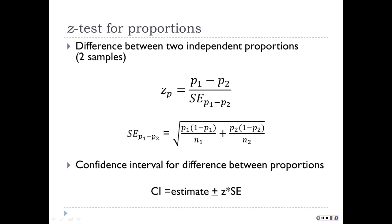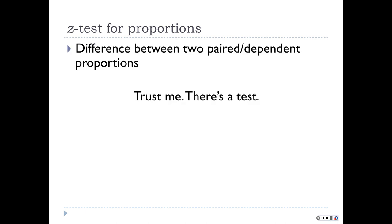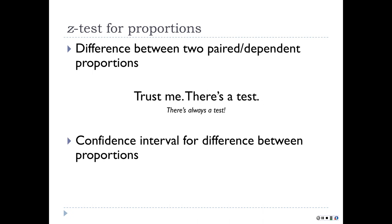The confidence interval is the same: you take the observed difference between proportions plus or minus your z-critical — like 1.96 or 2.58 — times the standard error you calculated. The difference between two paired or dependent proportions does exist but we're not going to do it. If you ever need to, you now know enough to look it up in a textbook. The confidence interval will follow almost exactly the same formula: the difference plus or minus the standard error times z like 1.96.